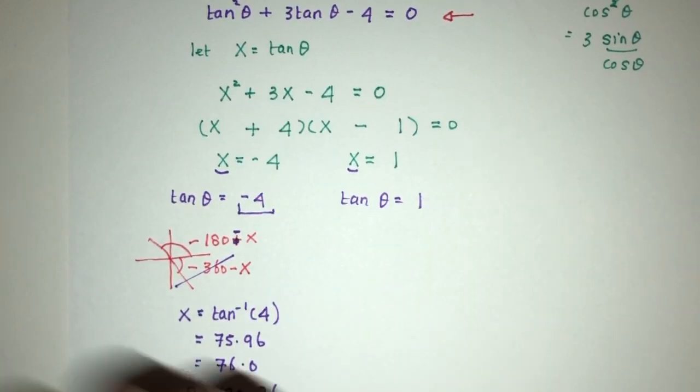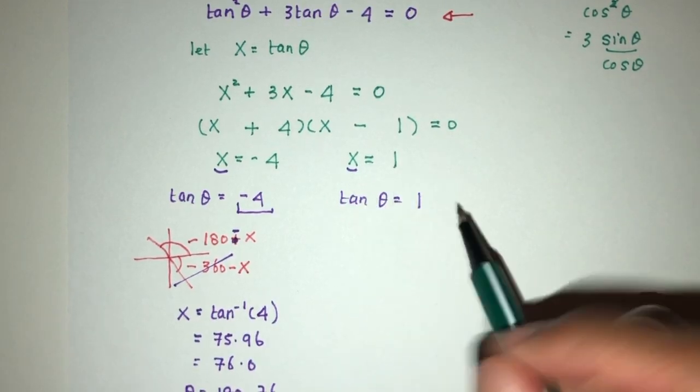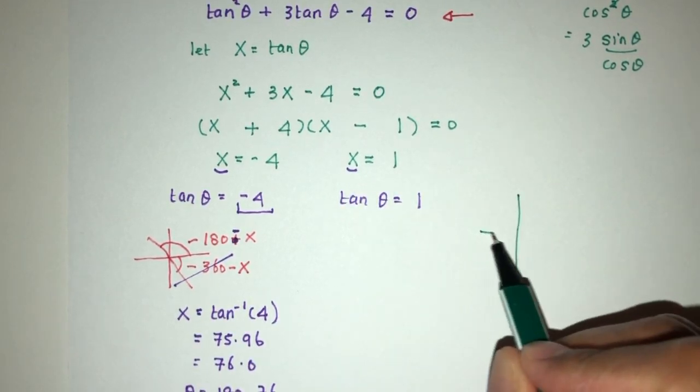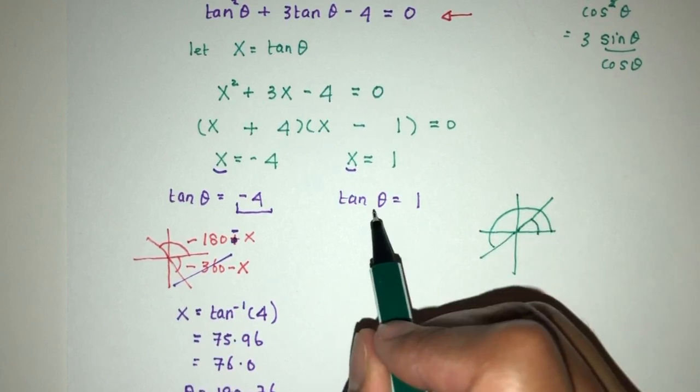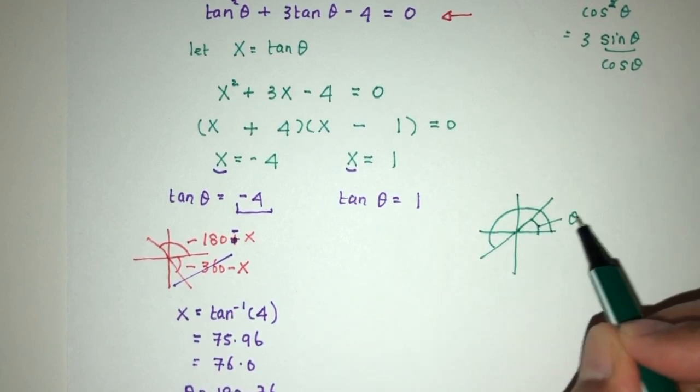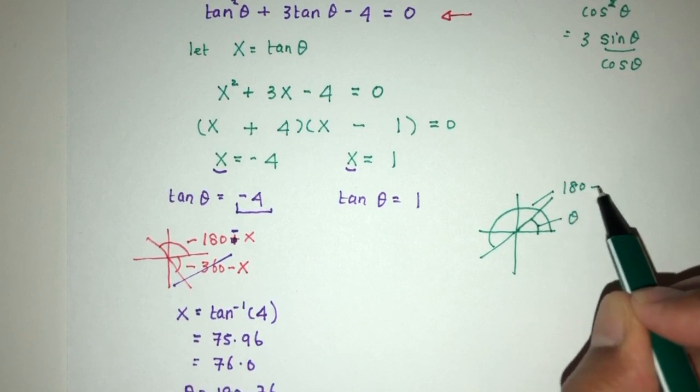Now for this one, it's pretty easy. When tan is positive, it will be in your first quadrant and in your third quadrant. Because it is positive, we can find the value directly, that will be 180 plus θ.